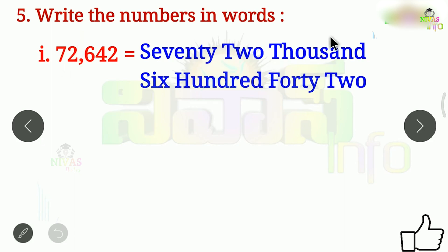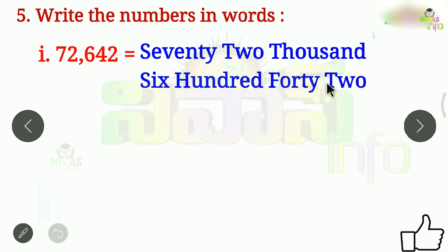That's how we use the number of thousands. Then 6 is 100. Then 4 is 40 — this is the 10th place. Then 2 is 2.